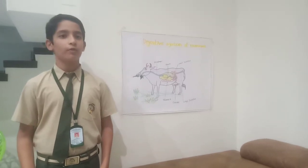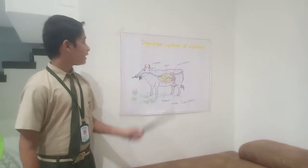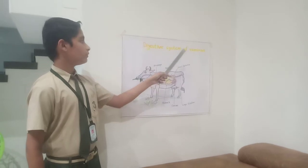Hey everyone, my name is Aditya Zadhara from class 70. My activity name is digestive system of ruminants.